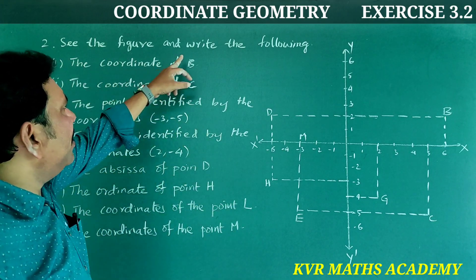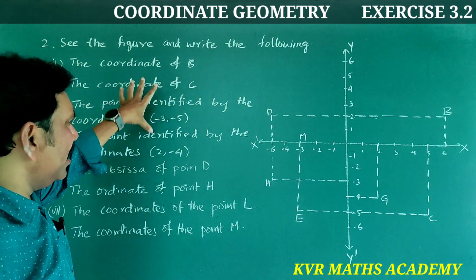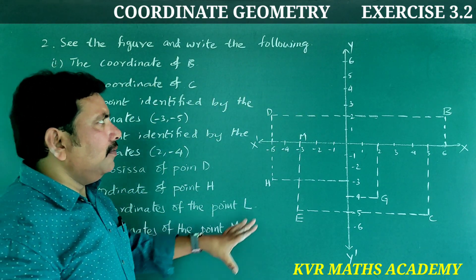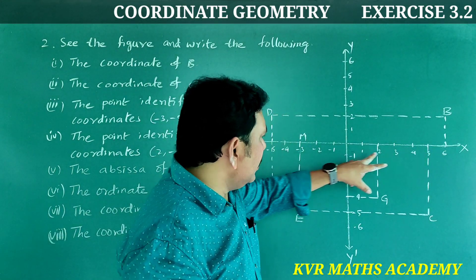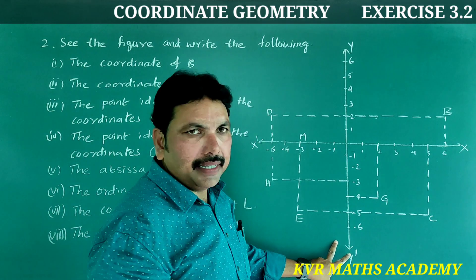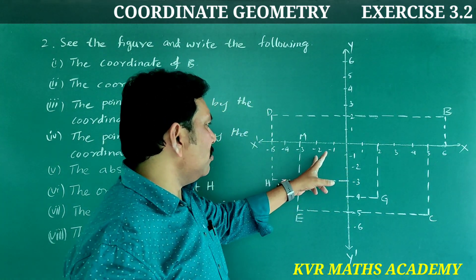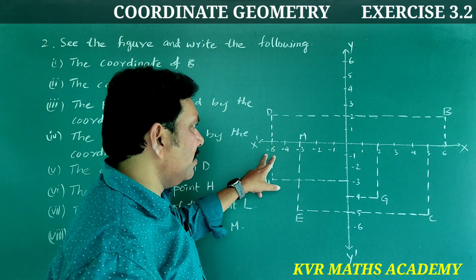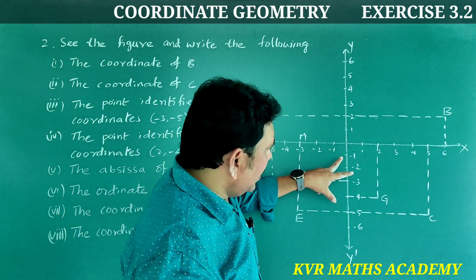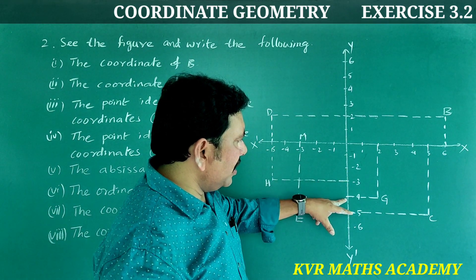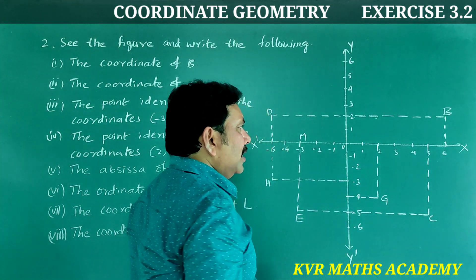Second question: See the figure and write the following. This is the x-axis and this is y-axis. On the x-axis, points are marked: 1, 2, 3, 4, 5, 6, and -1, -2, -3, -4, -5. On the y-axis: 1, 2, 3, 4, 5, 6. This is the origin O.